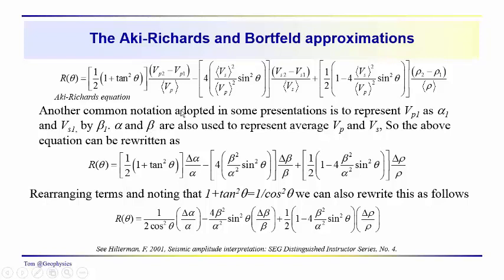We can rewrite this equation where we have the angular dependent reflection coefficient equal to 1/2 (1 + tan² θ) Δα/α - again alpha is the average P wave velocity, delta alpha is the difference in P wave velocities - and so on. Delta beta over beta for the shear wave terms and delta rho over rho for the density terms.